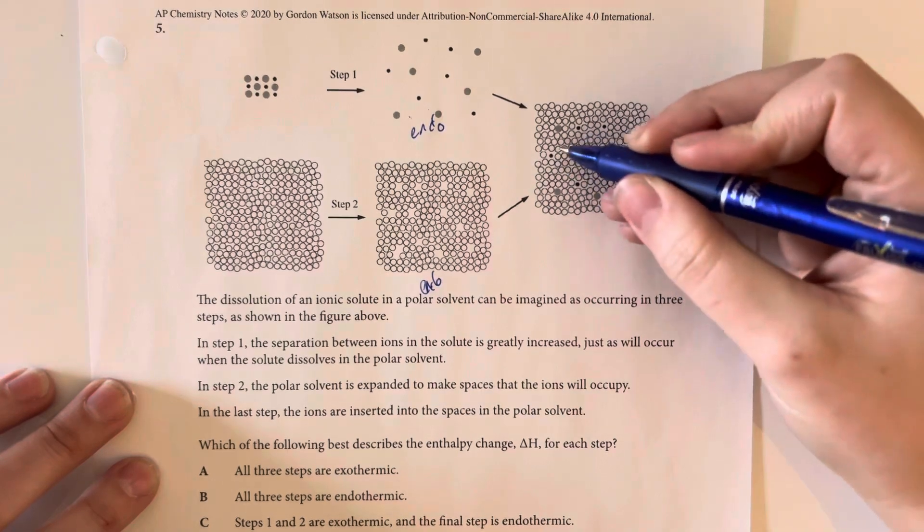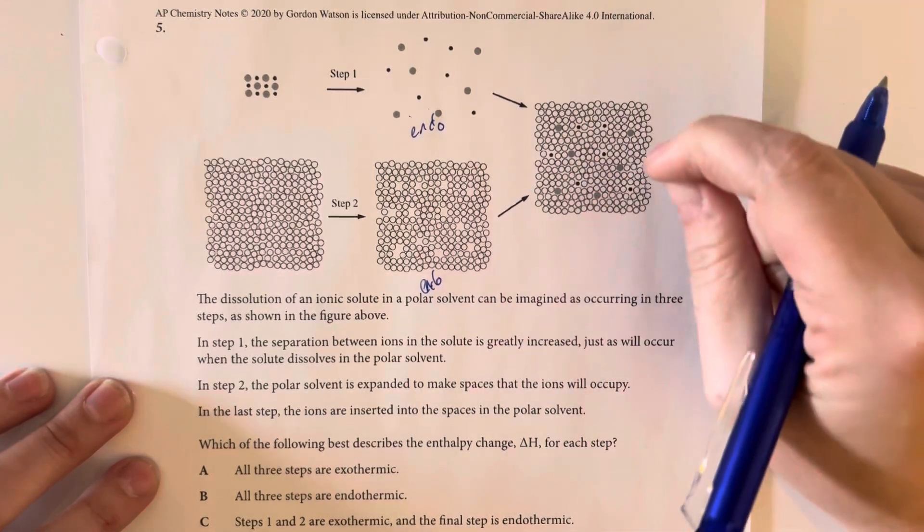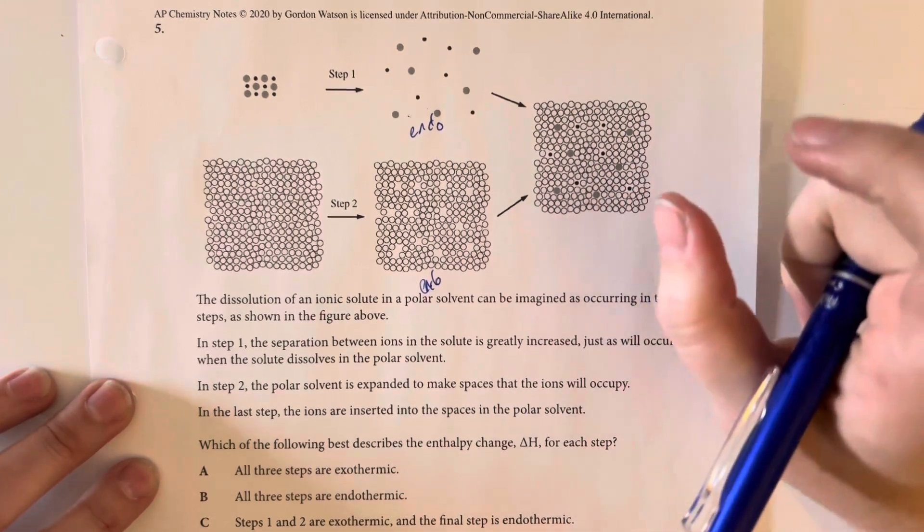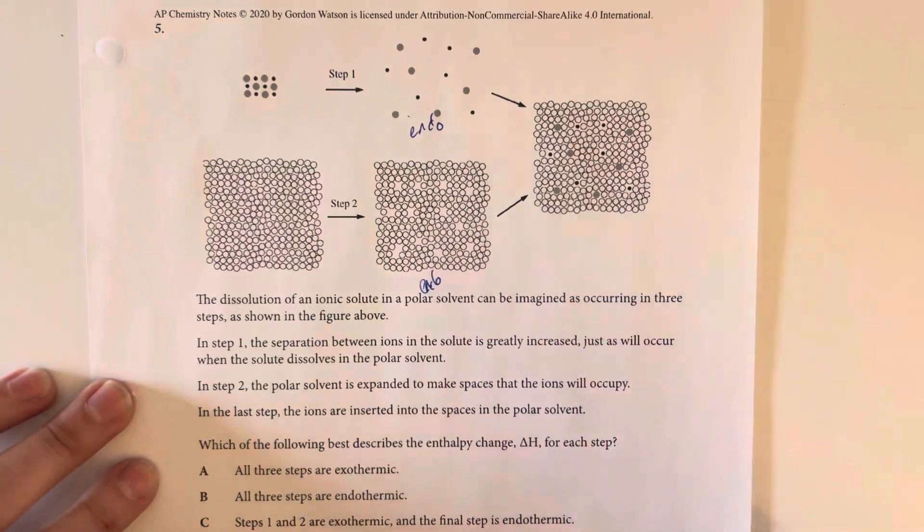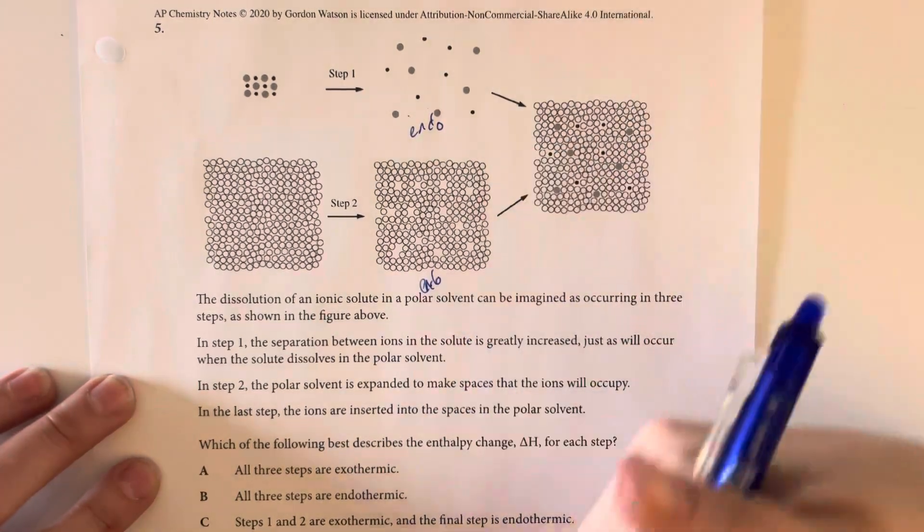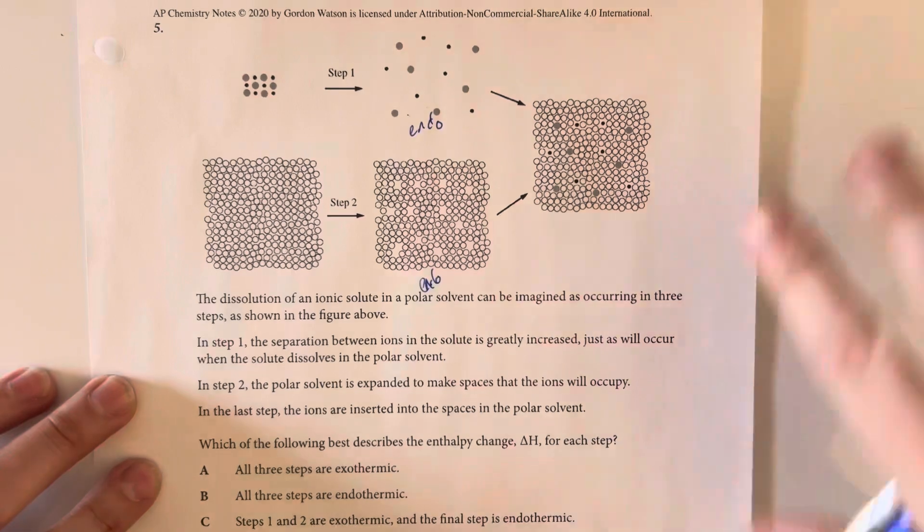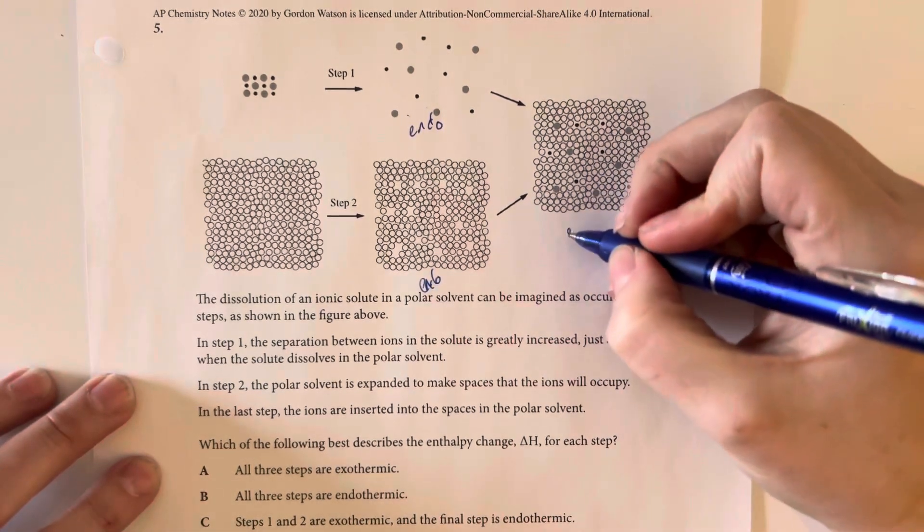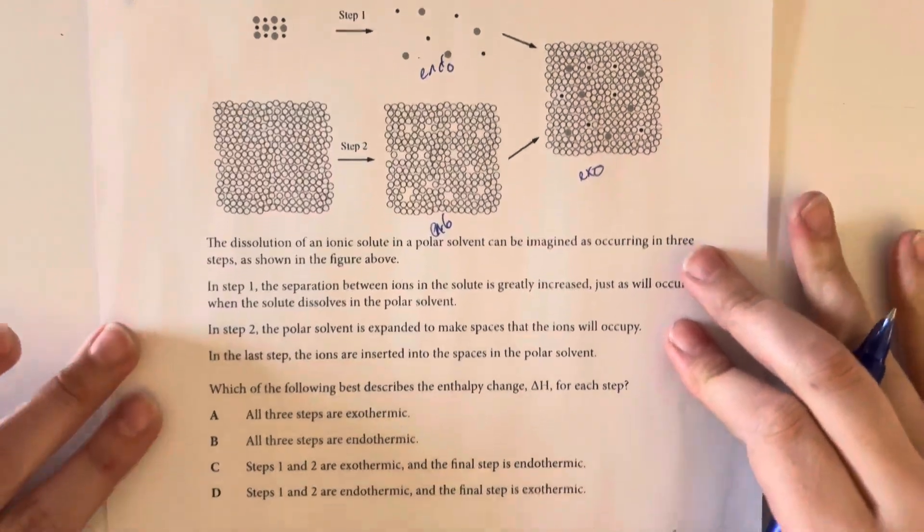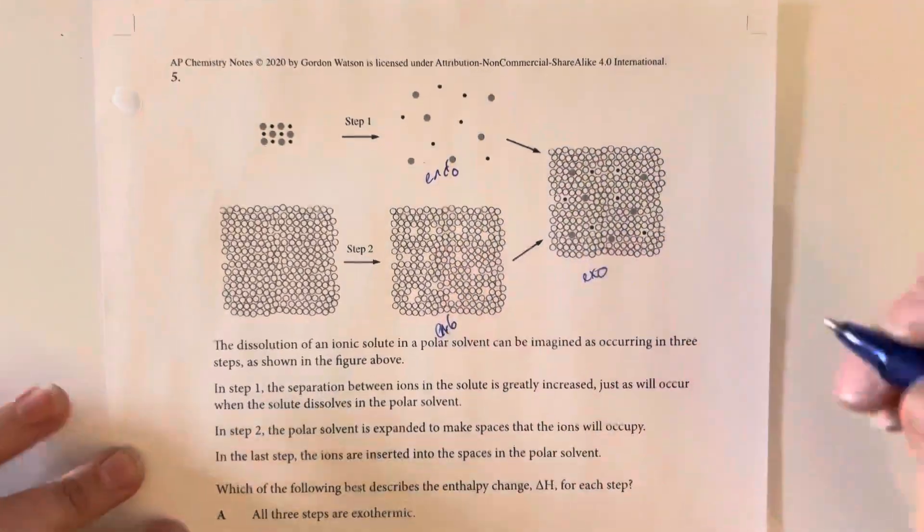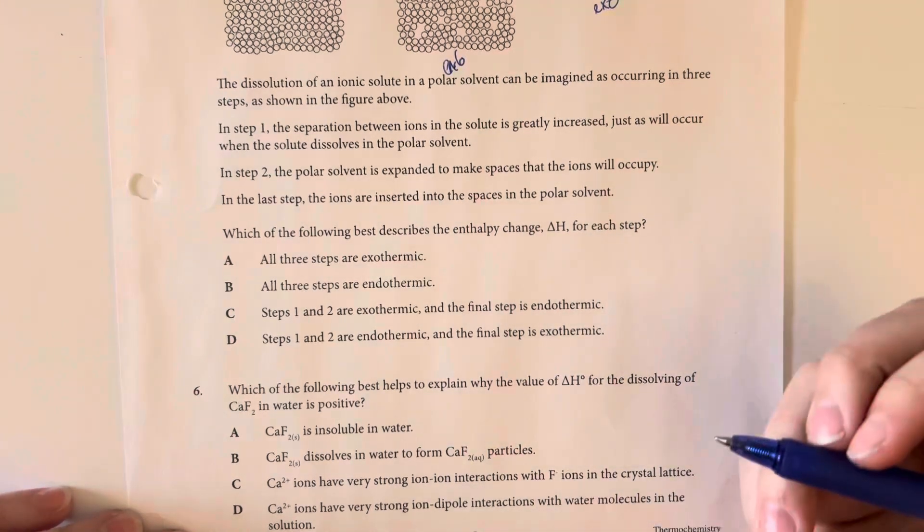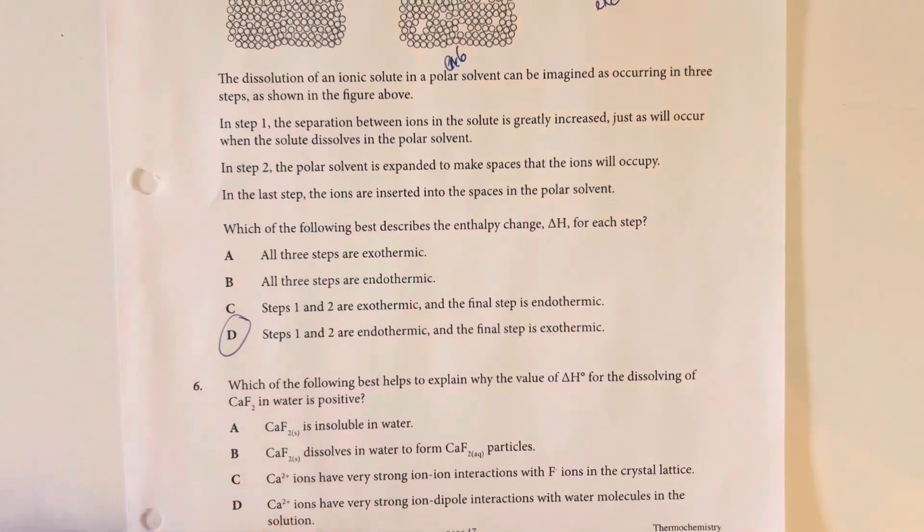And then here, where we have the water kind of collapsing around those individual ions, and we have the polar portions of the water being attracted to those individual ions, this is going to be a decrease of energy state. We are going into a more relaxed state. So, this is going to be an exothermic process. So, that means that we are looking for endo-endo-exo as our types and that is going to be option choice D.